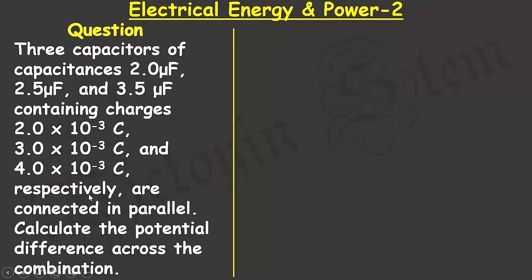each in coulombs, respectively, are connected in parallel. Calculate the potential difference across the combination.